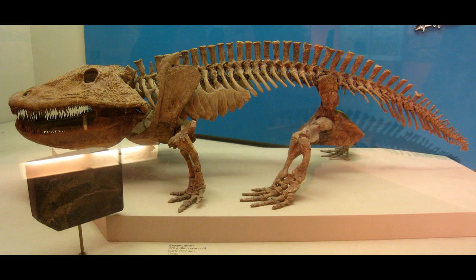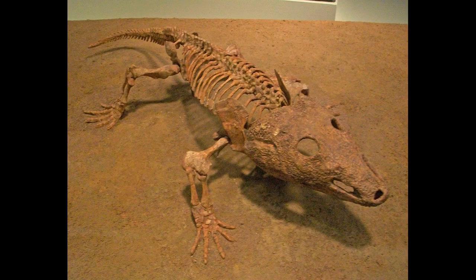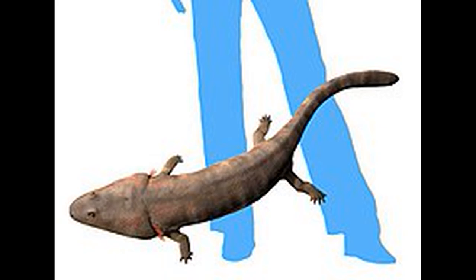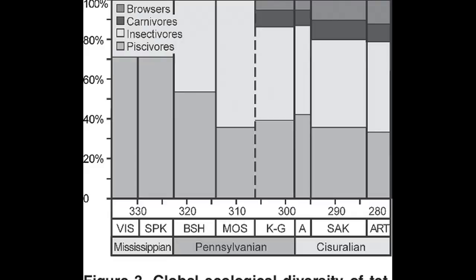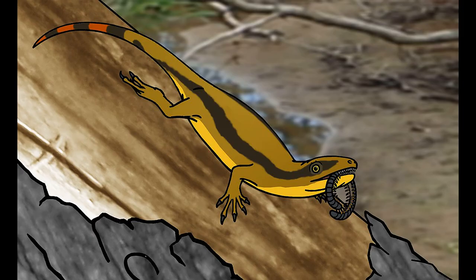Some amphibians did originate following the collapse, such as Areopidae, Trimitopidae, and Trimerorhachidae. Interestingly, nearly all tetrapods prior to the collapse were either insectivorous or piscivorous, but following it, herbivory and carnivory became rapidly established in many clades. The amniotes, with their hard-shelled eggs that could be laid on dry land and their protective scales for retaining moisture, were poised to inherit the earth.